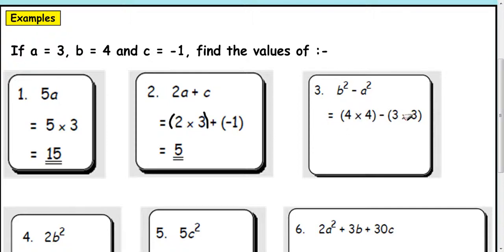So 4 times 4 is 16. And 3 times 3 is 9. So that comes to 16, take away 9. And that's 7.